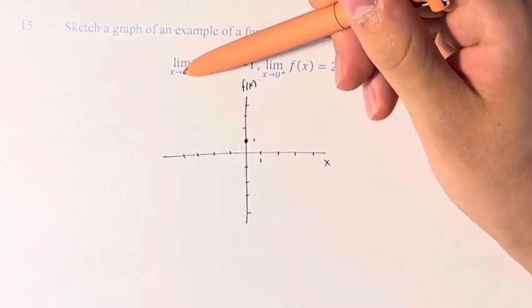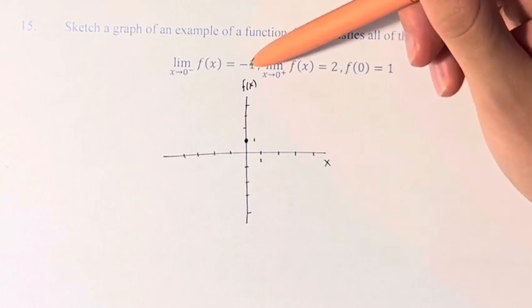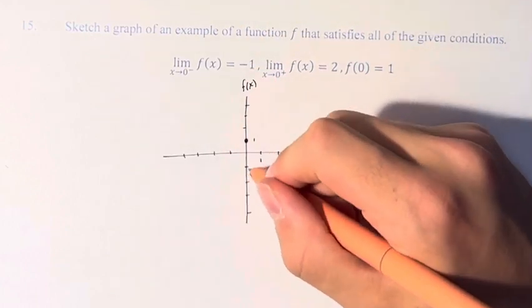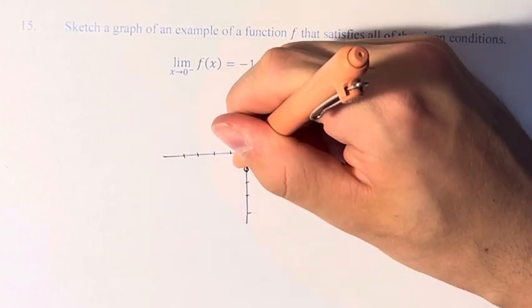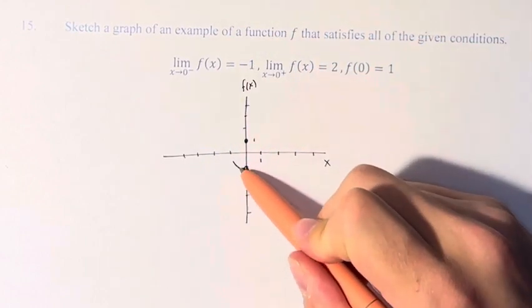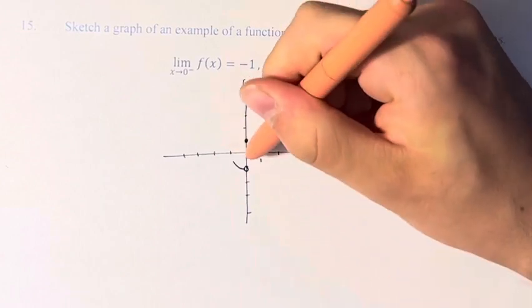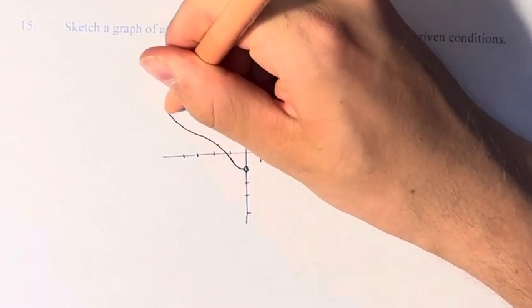And the limit as the function approaches 0 from the left is negative 1. So it doesn't exist at negative 1, so we have an open circle. But as we approach 0 from this direction, it goes to negative 1. And then we can draw any function we want right there.